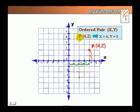There's a point P at the position 4 and 2. That means the x-coordinate is 4, the y-coordinate is 2. 1, 2, 3, 4 for x, and 1, 2 for y. That's where they meet.